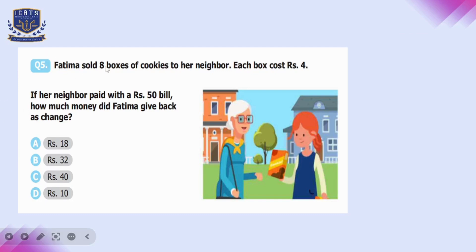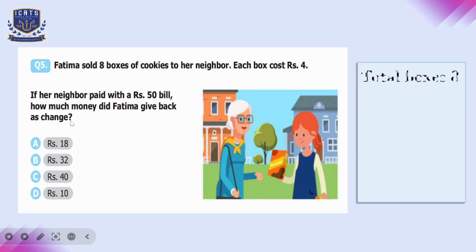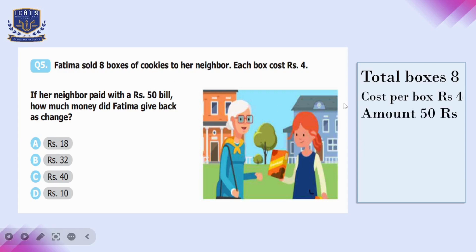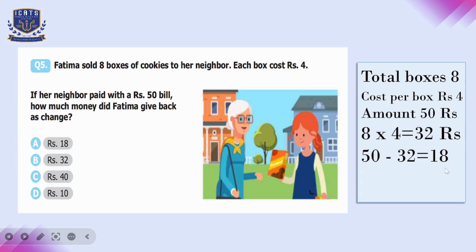Question number five: Fatima sold eight boxes of cookies at rupees four each. Her neighbor paid with a rupees 50 bill. Multiply eight by four to get 32 rupees total. Subtract 32 from 50 to get 18 rupees change. So option A is the correct answer.